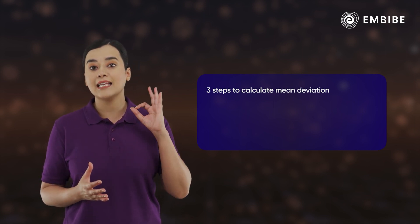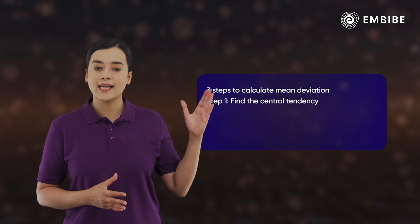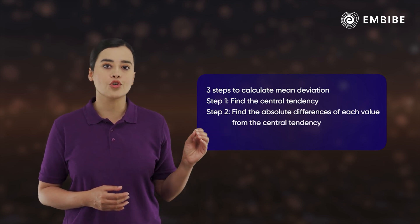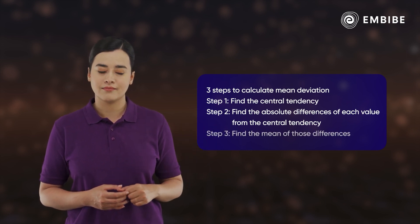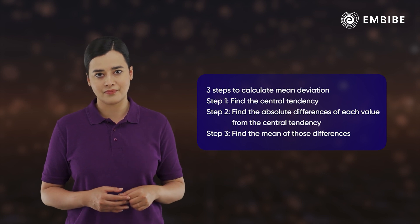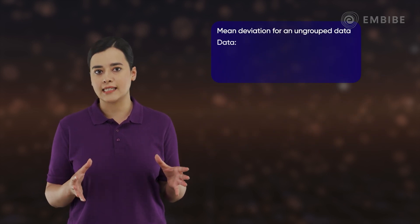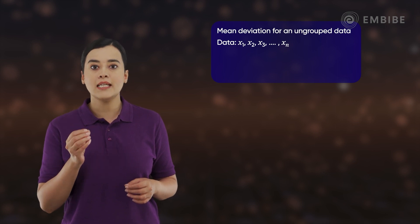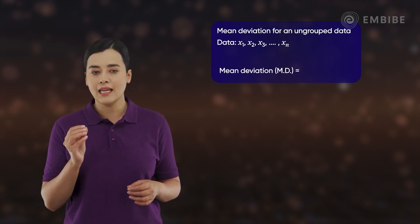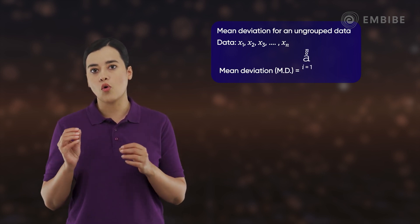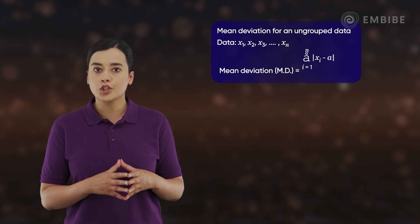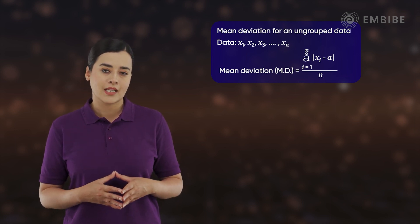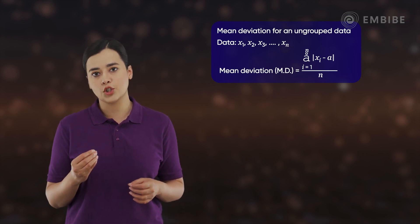The mean deviation of any set of data can be calculated in exactly three steps: first, find the central tendency of the observations; next, find the absolute differences of each observation from that central tendency; and lastly, find the mean of those differences. For an ungrouped data set with n observations x₁, x₂, up to xₙ, the mean deviation from a central tendency a is: summation over i from 1 to n of |xᵢ − a|, divided by n.